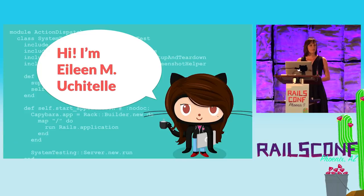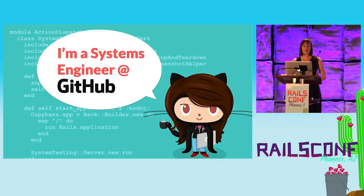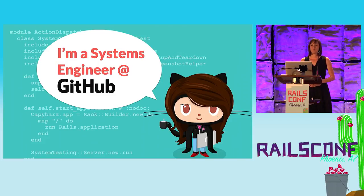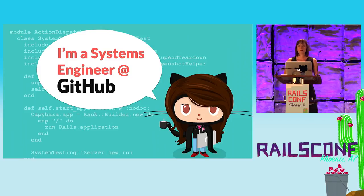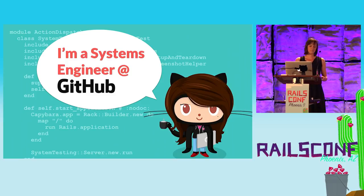Hi everyone, I'm really excited to be at RailsConf this year. I'm Eileen Uchitel and I'm a senior systems engineer on GitHub's platform systems team. That's quite a mouthful, but it basically means that my team is responsible for working on internal and external tools for the GitHub application. We work on improving Rails, Ruby, and other open source libraries and how those tools interact with GitHub.